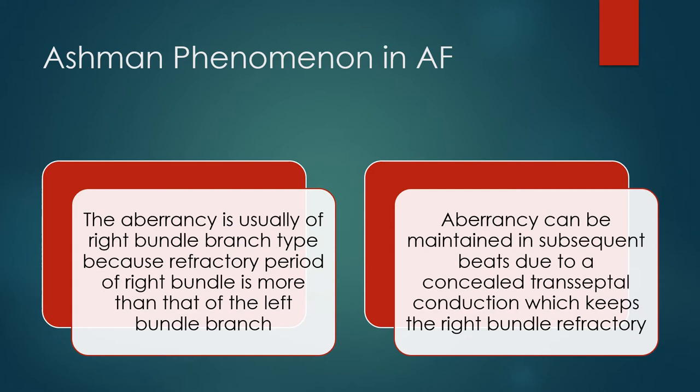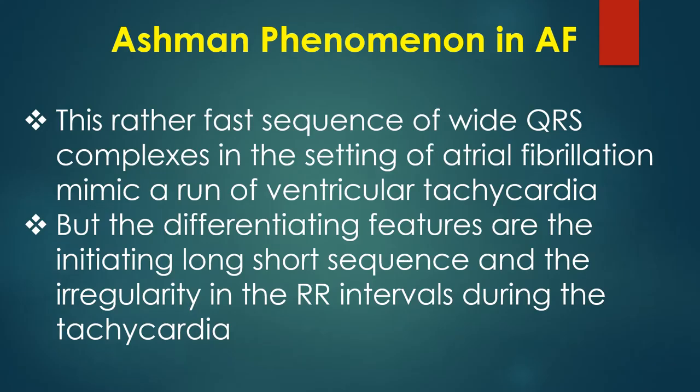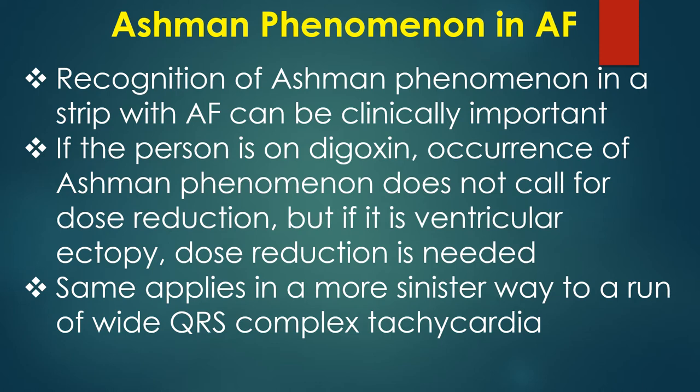Aberrancy can be maintained in subsequent beats due to concealed transeptal conduction which keeps the right bundle branch refractory. This rather fast sequence of wide QRS complexes in the setting of atrial fibrillation mimics a run of ventricular tachycardia, but the differentiating features are the initiating long-short sequence and the irregularity in RR interval during the tachycardia. Recognition of Ashman phenomenon in a strip of AF can be clinically important.